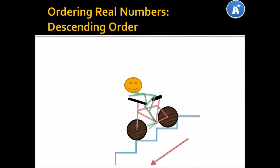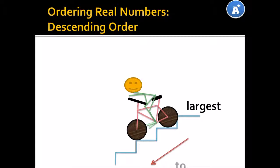Descending order. Descending order can be likened to riding down a stairwell with a bicycle — if you are that brave! It's simply going from your top to your bottom, or from the largest to the smallest.